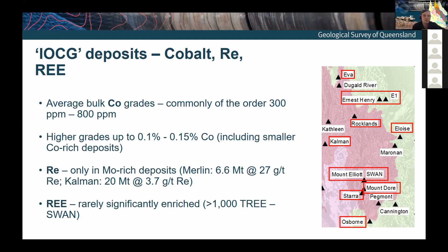Rhenium is significantly concentrated only in molybdenum-rich parts — there are two deposits where rhenium grades estimated in bulk are quite significant. Regarding rare earth elements, they are considered to be typically enriched in IOCGs, but in the Cloncurry district they are significantly enriched above 1,000 ppm total rare earths in just a few deposits. The highest enrichment is in Swan, with a nearby deposit slightly lower.